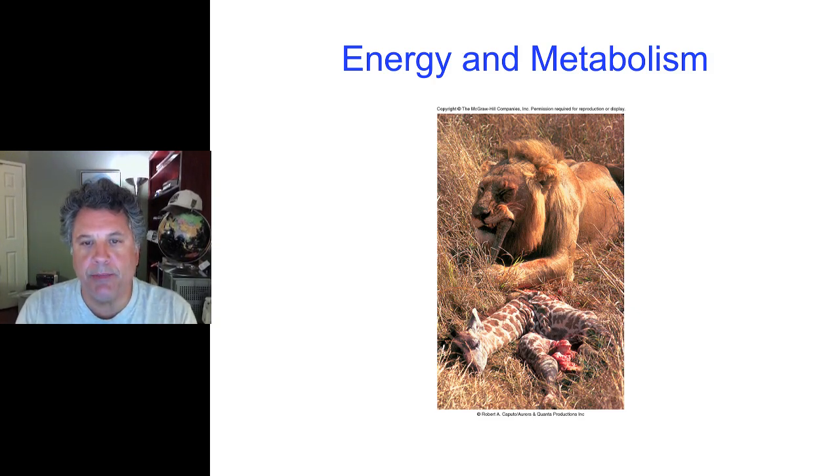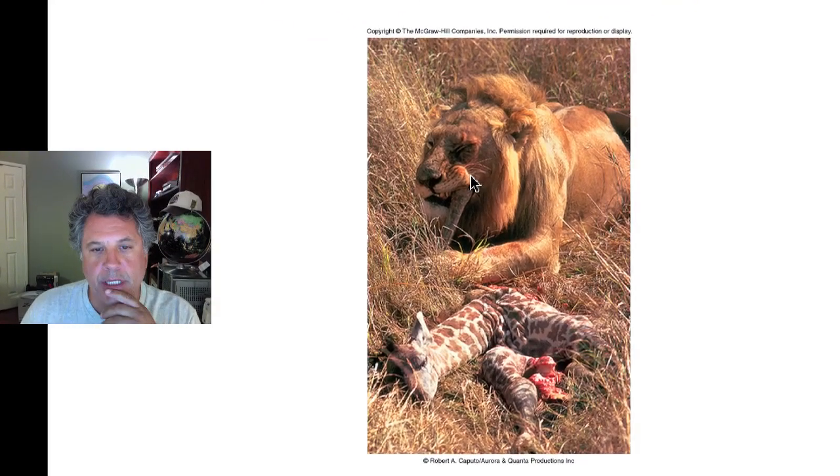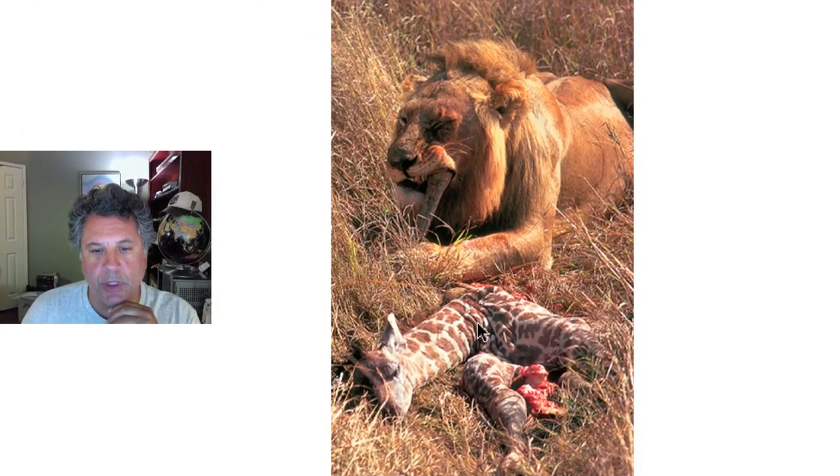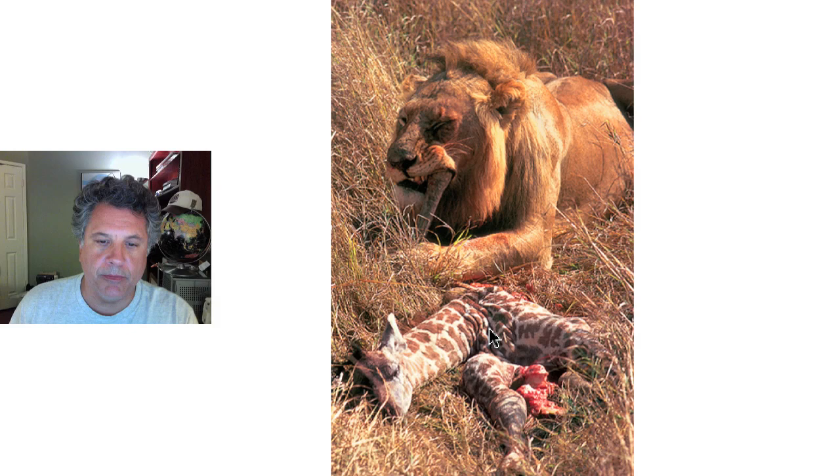Well, life captures energy to maintain order, and this lion shown here is using the energy in this poor little giraffe to maintain order in the lion body. Where did the giraffe get its energy from? It got it from leaves—it's an herbivore—so it ate leaves to provide energy to maintain the order present in the giraffe body.